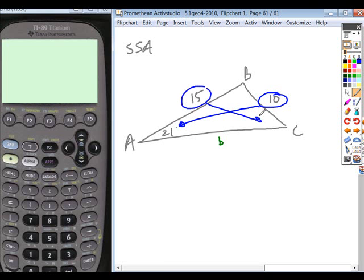So my suggestion is set up your ratio so your unknown is on the top of the fraction. So sine of C, that's our unknown, over the side opposite it is equal to, based on the law of sines, the sine of our known angle, 21 degrees, over the side opposite it, 10. So here's our calculation.